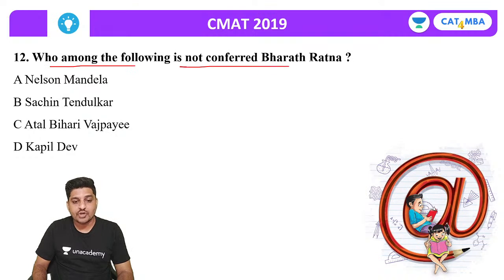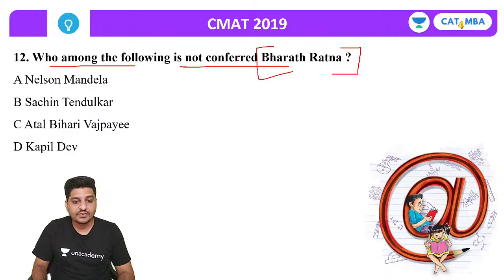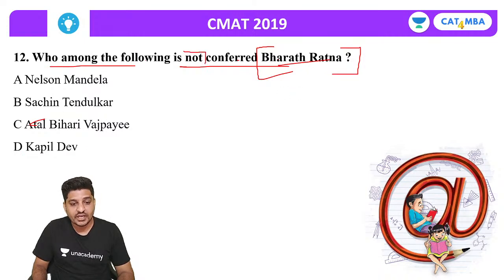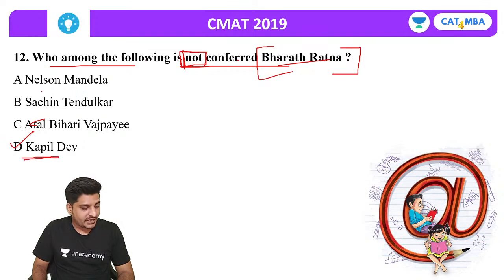Next question: Who among the following has NOT been conferred the Bharat Ratna? The options are Nelson Mandela, Sachin Tendulkar, Atal Bihari Vajpayee and Kapil Dev. Nelson Mandela, Sachin Tendulkar and Atal Bihari Vajpayee have all received the Bharat Ratna. The correct answer is Kapil Dev — he has not been conferred the Bharat Ratna.